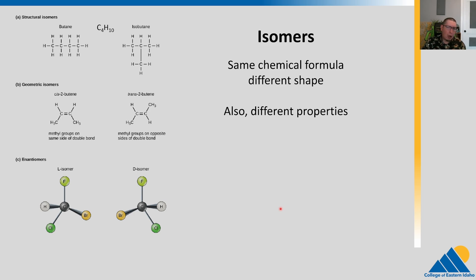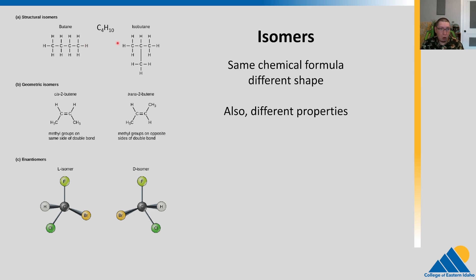Let's throw out another term: isomers. Isomers are when we have the same chemical formula but a different shape. Remember, shape affects properties — here is an example. We have butane, which is C4H10. It can be arranged in this linear molecule, or it can be this branched structure. These are two different substances: one is butane, one is isobutane. Butane gets used as a fuel — butane lighters and things like that.